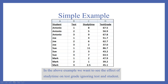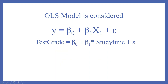Let's take an example. We have columns: student, test, study time, and test grade. In the above example, we want to see the effect of study time on test grade. We don't consider student intelligence or the test. So the OLS model will be: y = beta0 + beta1*x1 + error term. That is, test grade = beta0 + beta1*(study time) + error term.